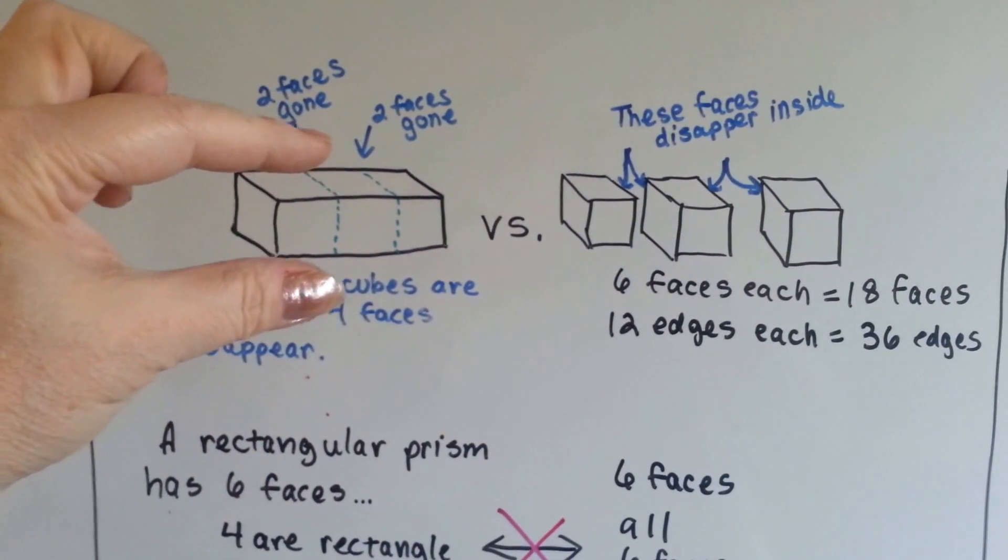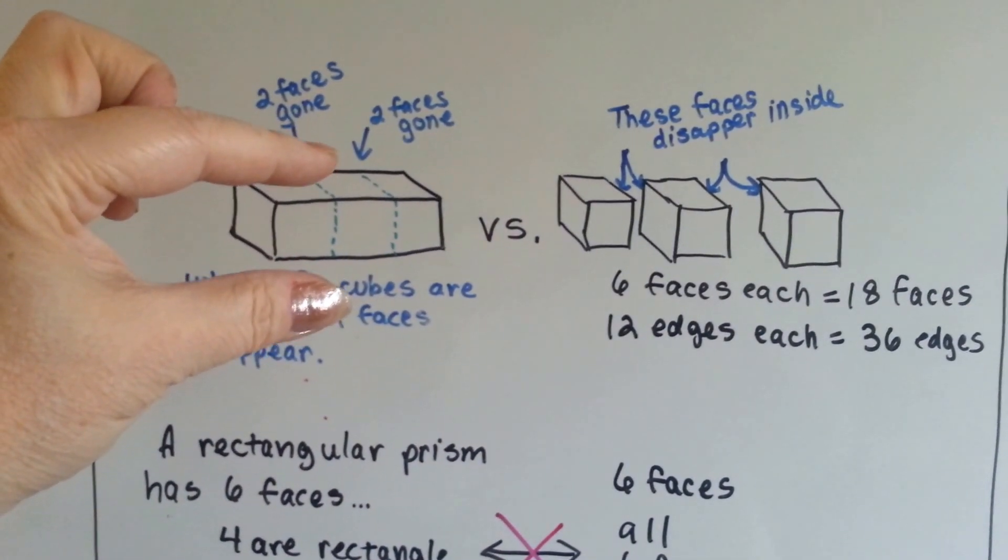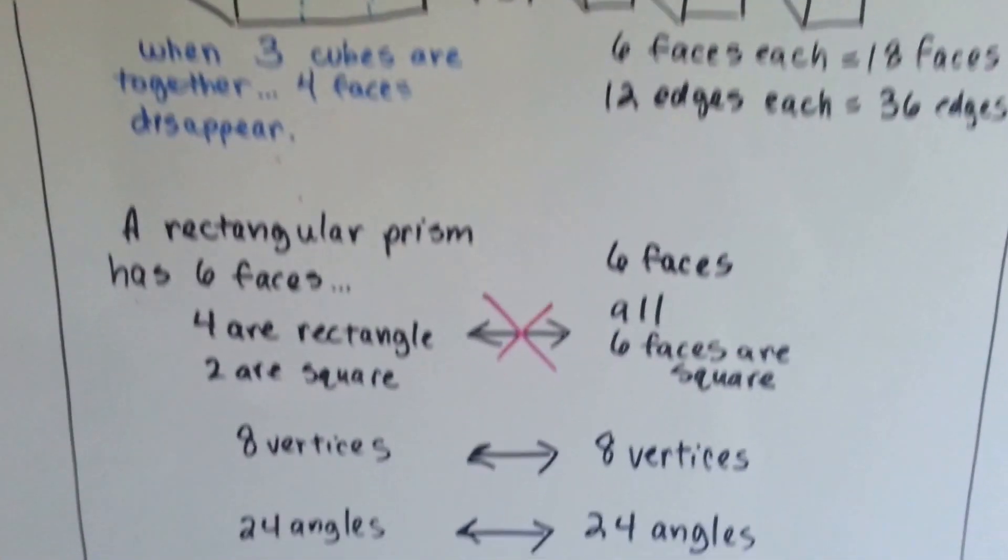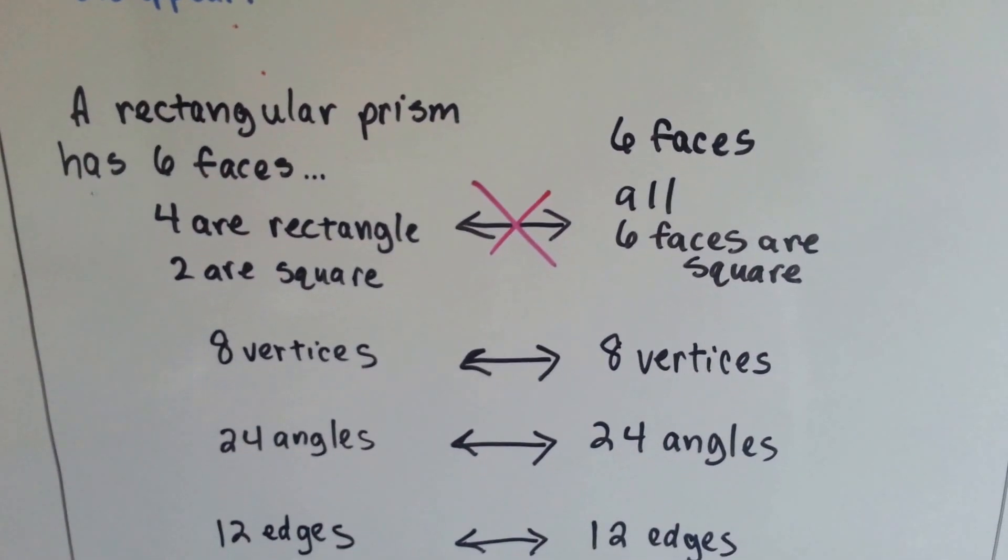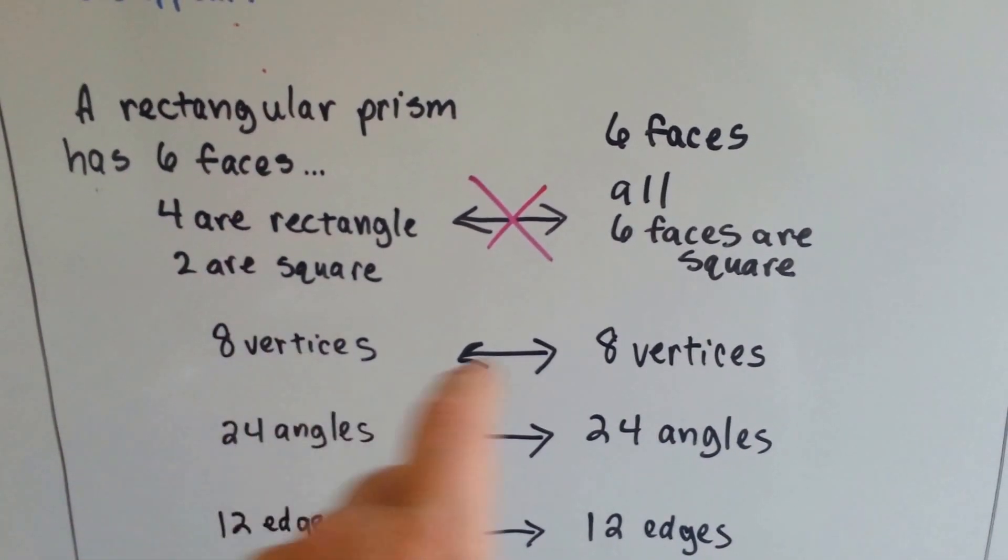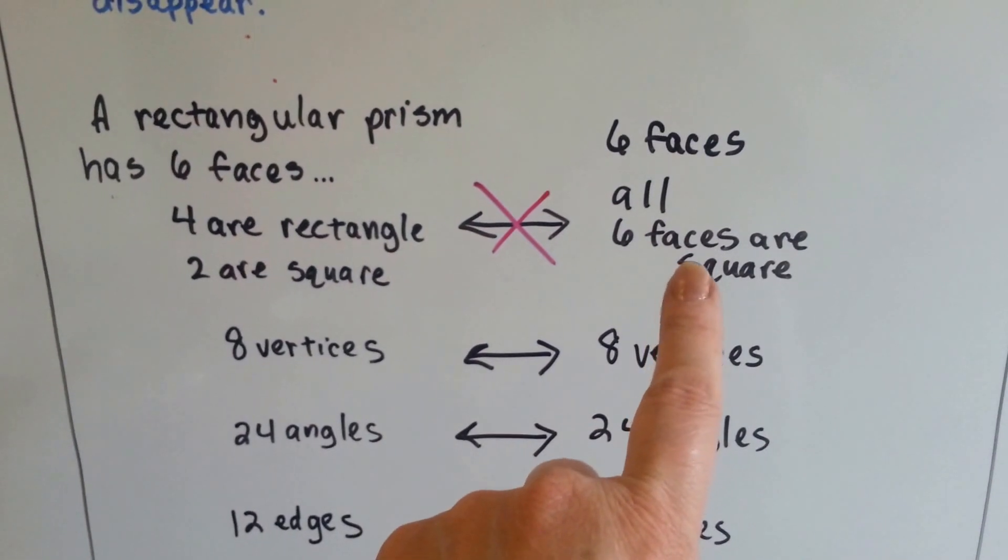This rectangle really does still have six faces. A rectangular prism has six faces, so does a unit cube. The difference is, these are four rectangles and two squares, and these are six identical squares.